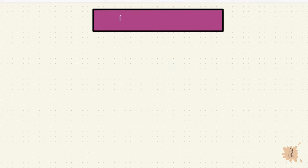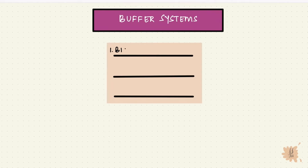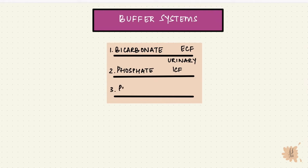There are three buffer systems in the body. The most important is the bicarb buffer in the extracellular fluid. The others are the phosphate buffer, which is a urinary and intracellular buffer, and protein buffers like hemoglobin, which is the main intracellular buffer.